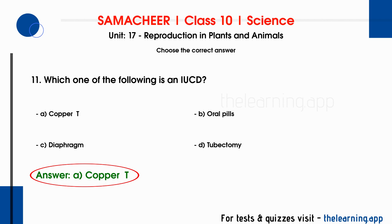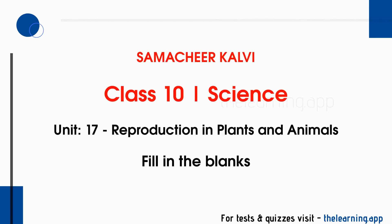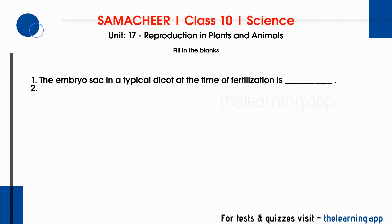Next, fill in the blanks. First question: the embryo sac in a typical dicot at the time of fertilization is DASH. The correct answer is 7-celled.